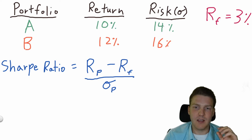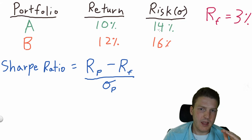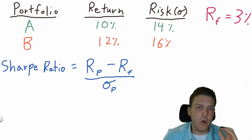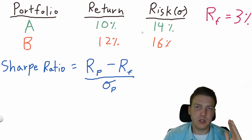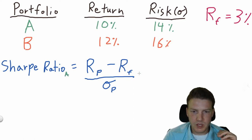Now let's assume we have two portfolios. Portfolio A has an expected return of 10% and a risk of 14%. Portfolio B has an expected return of 12% and a risk of 16%. Let's see which portfolio is preferable according to the Sharpe ratio.